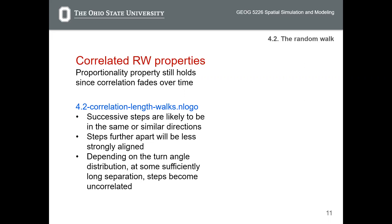Why does proportionality still hold in a correlated random walk? Although consecutive steps in a correlated random walk are correlated with each other in terms of direction — because each step's direction is based on the previous step's direction with a specific turn angle — if the step number is large enough, this correlation disappears when the time is long enough.